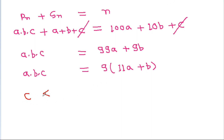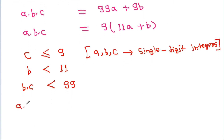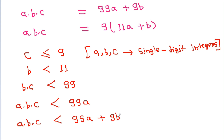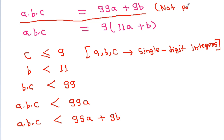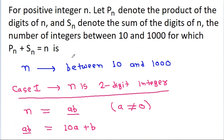Since A, B, C are single digit integers, C is less than or equal to 9. Therefore A times B times C equals 99A plus 9B is not possible, as the right side is too large for single-digit values. So the total number of integers satisfying the condition is 9.